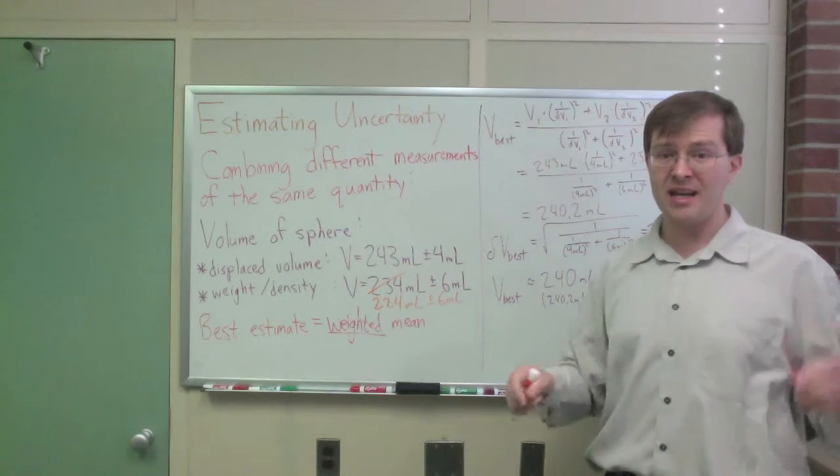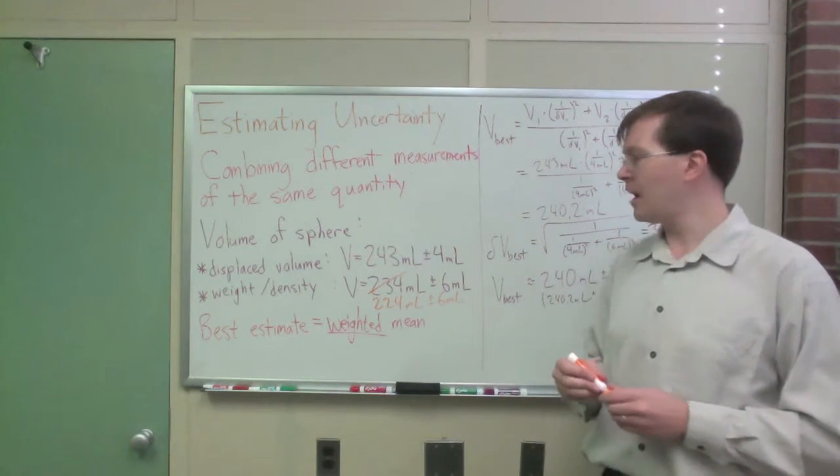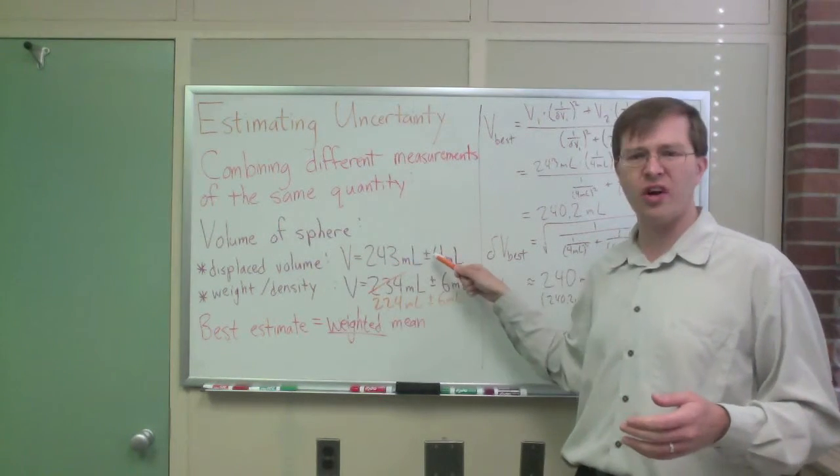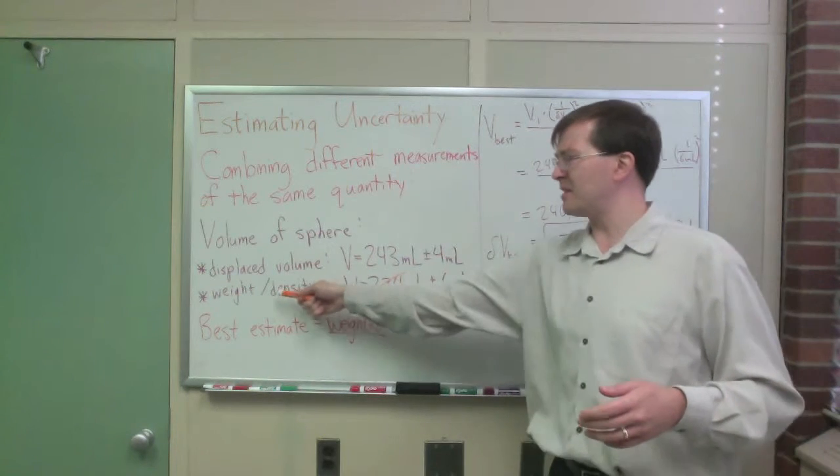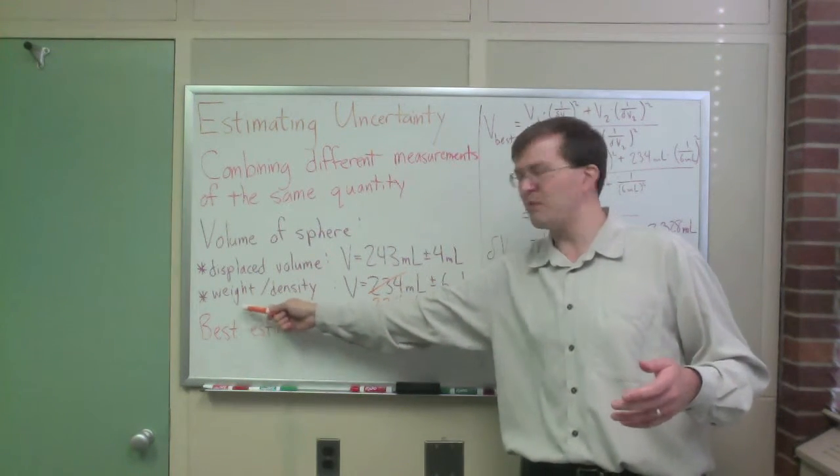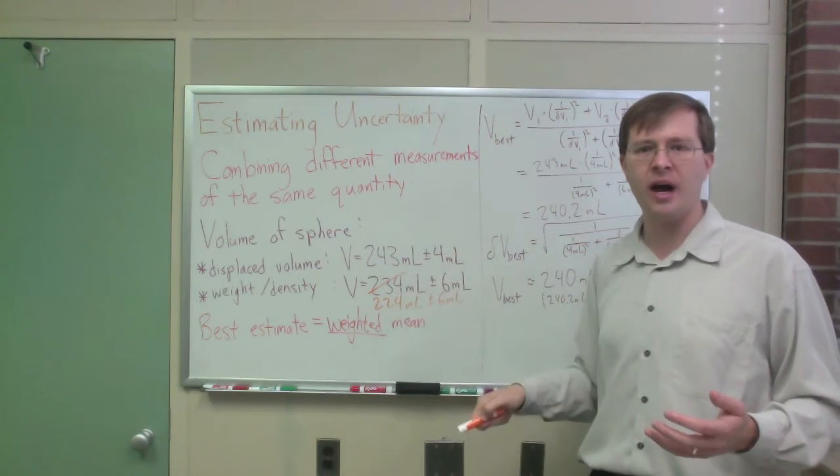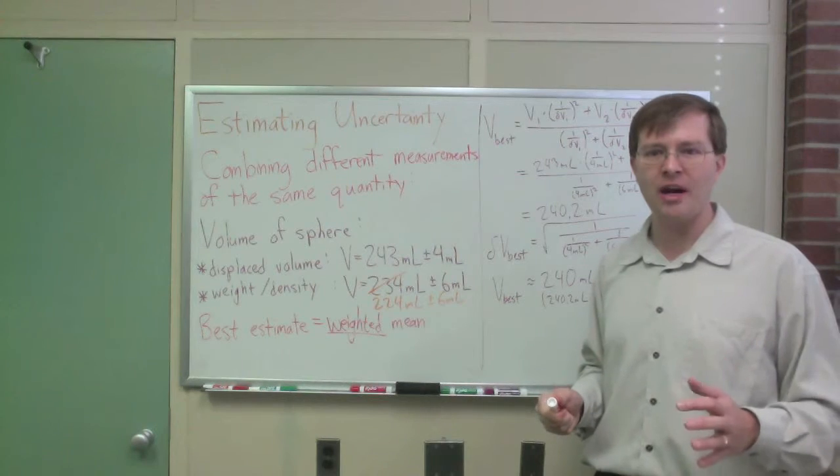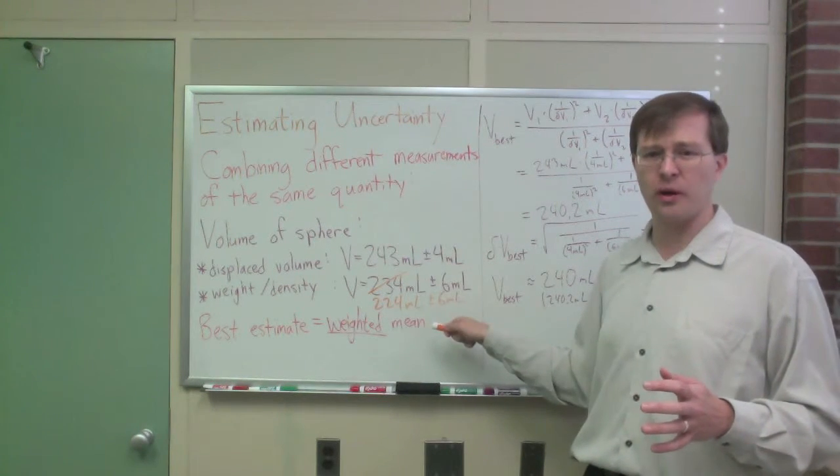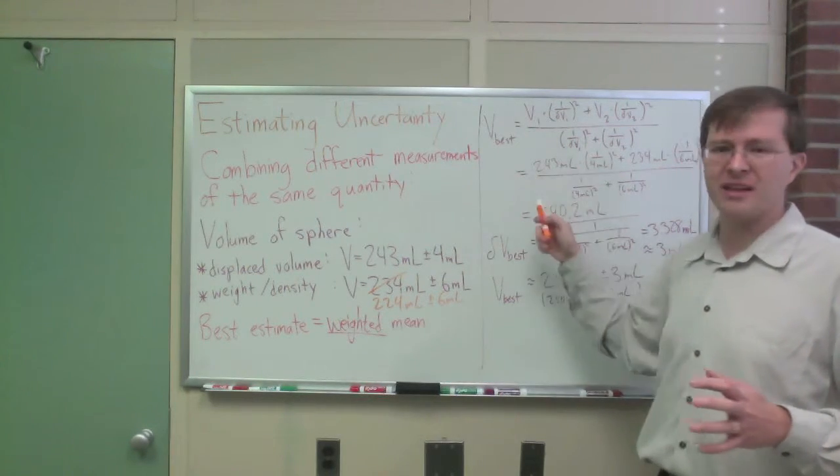If that's the case, I have to figure out why I got such different answers for those two things. Maybe I should go back and find out, maybe did I splash some water out of my graduated cylinder when I measured the volume? Did I maybe not zero my scale right, my balance right, when I measured the mass to do this thing? Maybe I just made some systematic error in one of them that's throwing it off.